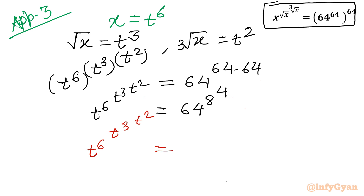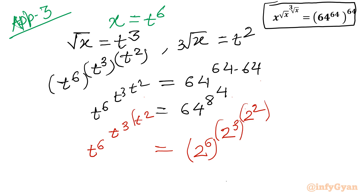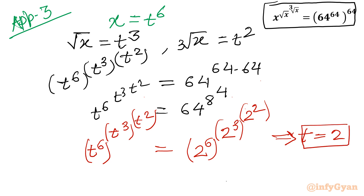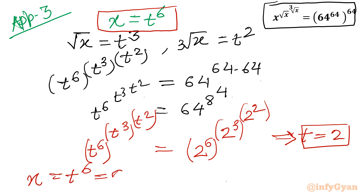Now 64 can be written as 2 power 6, and 8 as 2 cubed, then power 4 can be written as 2 squared. By comparing both sides we can conclude t must be equal to 2. Once t is 2, we find x: x equals t power 6, so x equals 2 power 6, which is 64.